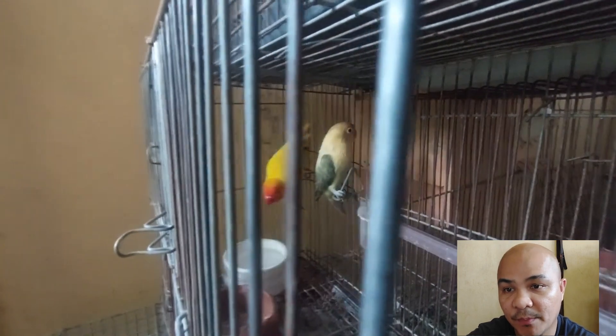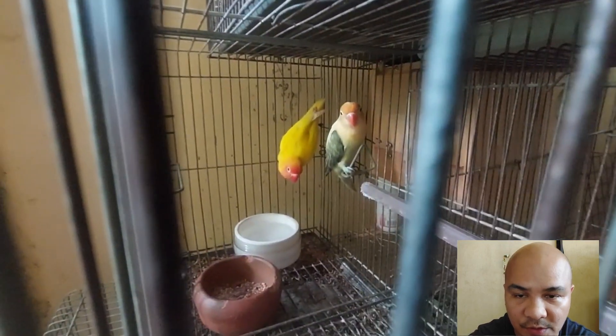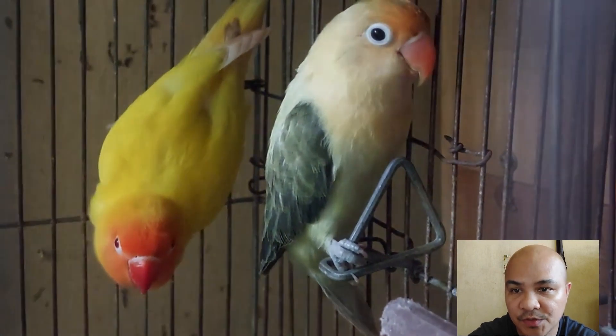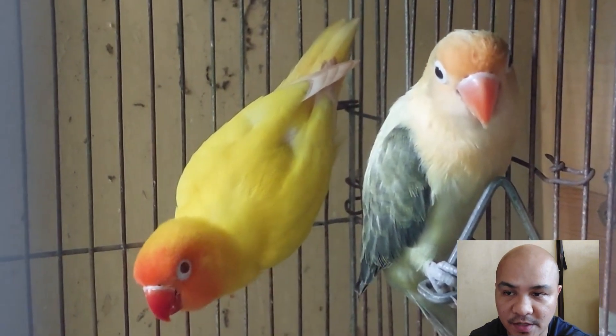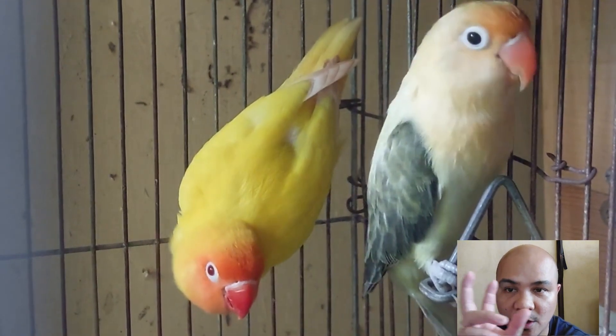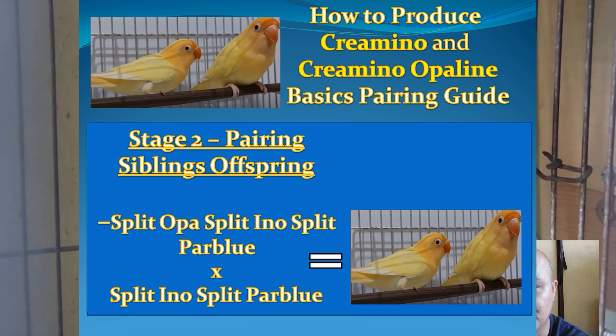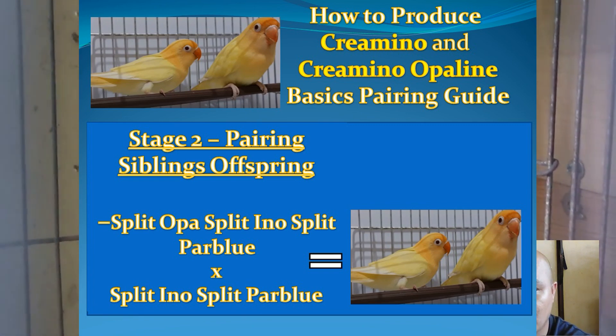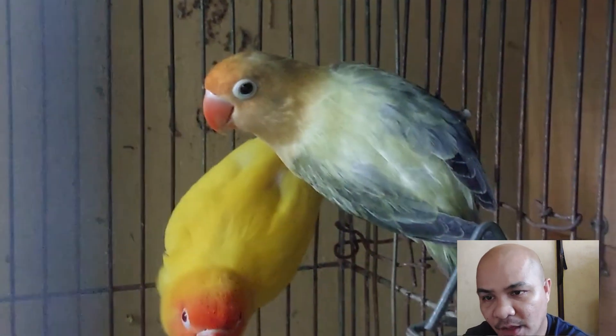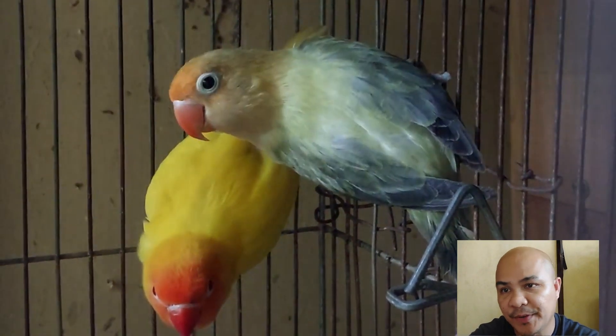Plus, because the female par blue has the opaline mutation, if the offspring is male it will be split opaline and split ino. The offspring should have genes of ino and par blue. For the second stage, we're going to take those offspring and pair them together to produce crimino mutation lovebirds or crimino opaline lovebirds.